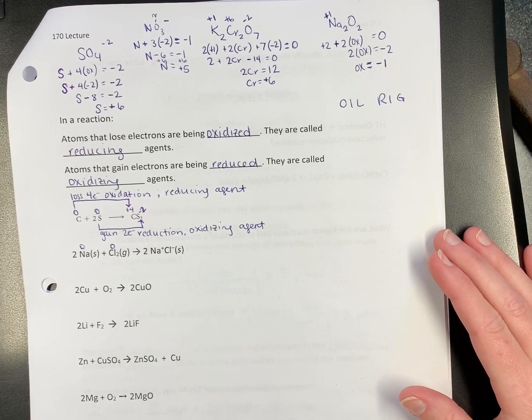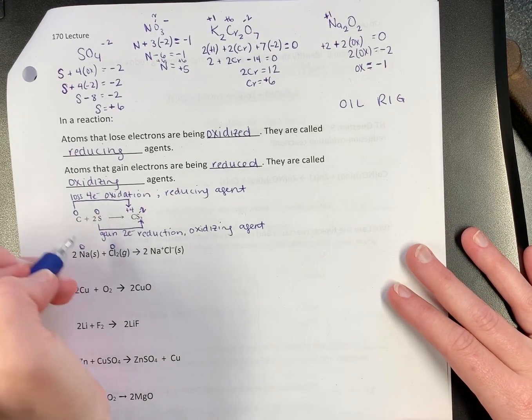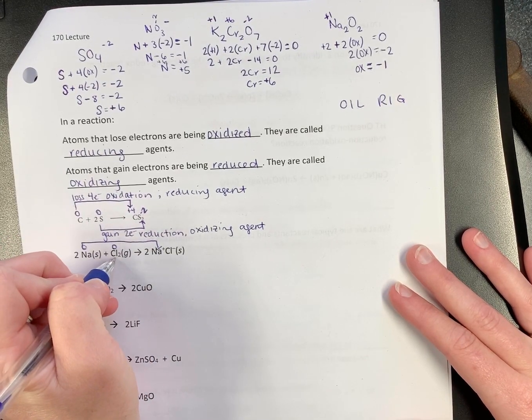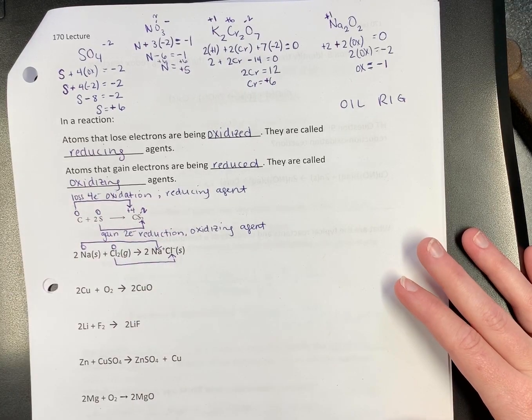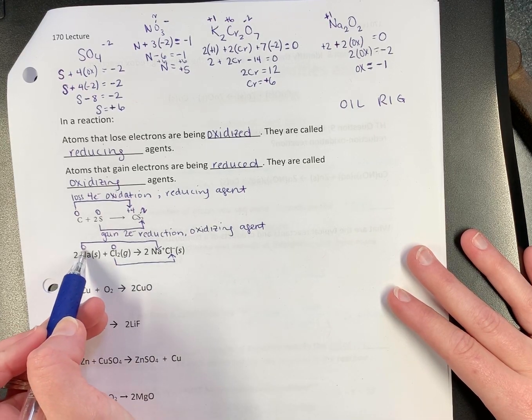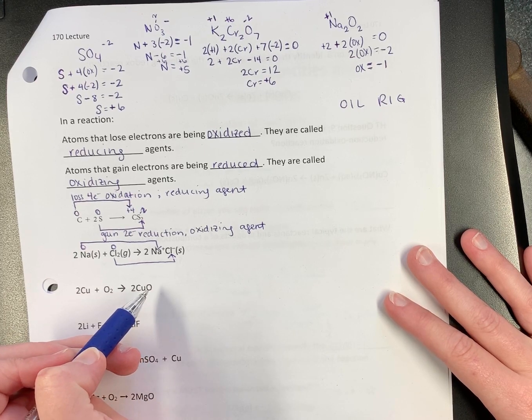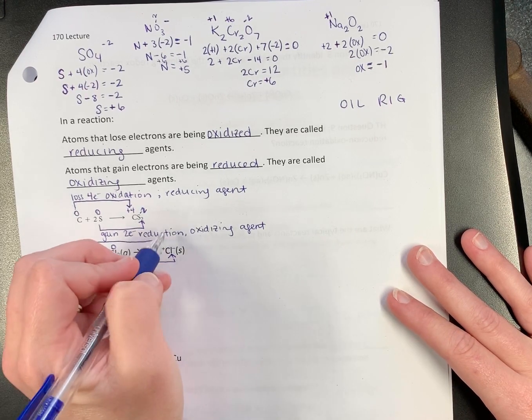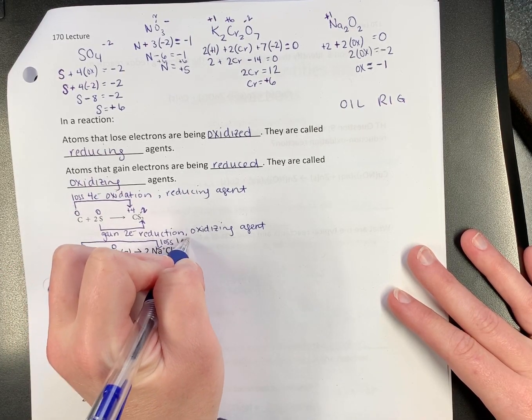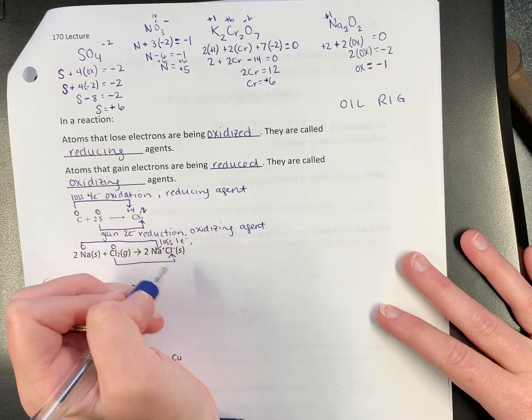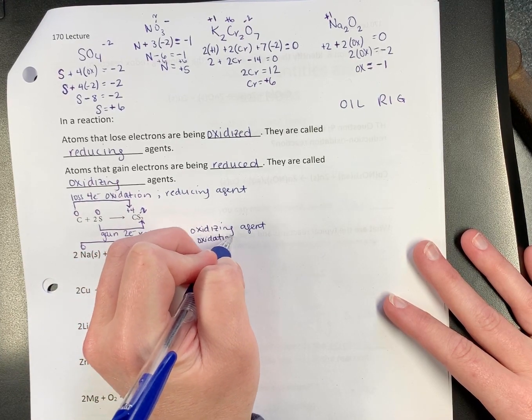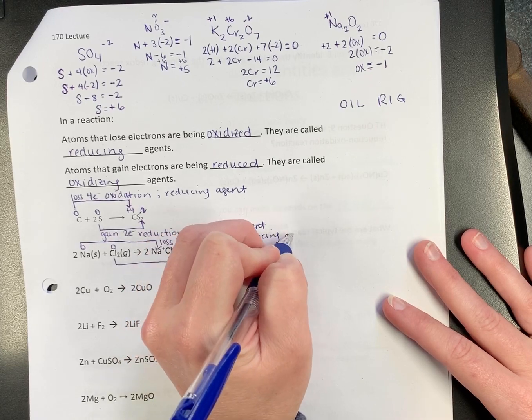Draw some arrows. It doesn't matter which is on top and which is on bottom. I don't really care. But I usually go top first. If we're dealing with sodium, sodium goes from zero to plus one. Is it gaining or losing? Losing. Loss of one electron. So if it loses, is it oxidation or reduction? Oxidation is loss.